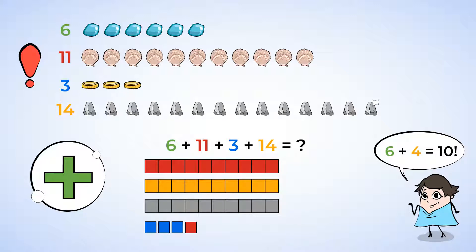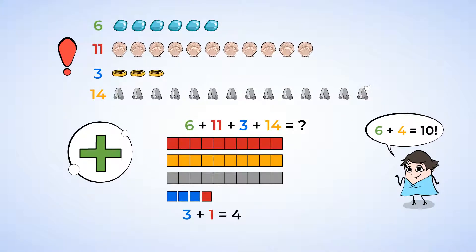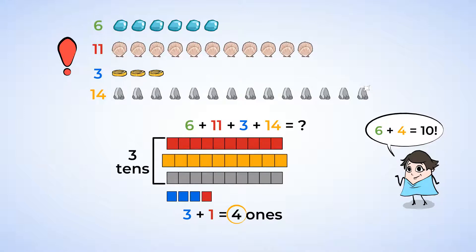Let's count up the rest of the unit cubes. 3 and 1 make 4, so we have 4 ones. Now let's move on to the tens place. We also have 3 tens sticks, one from the seashells, one from the rocks, and then the last one we made by trading in our unit cubes.